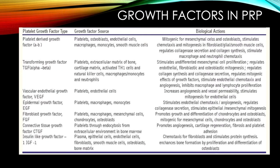There are about seven to twelve growth factors in PRP. The predominant ones are platelet-derived growth factor, TGF-beta, VEGF, epidermal growth factor, fibroblast growth factor, connective tissue growth factor, and insulin-like growth factor. These are predominantly where the bioactive effects of PRP come from.